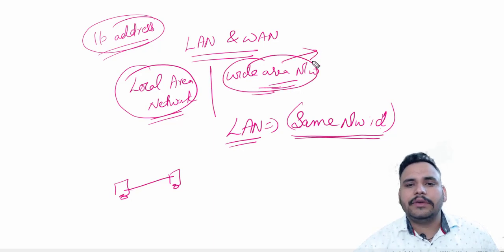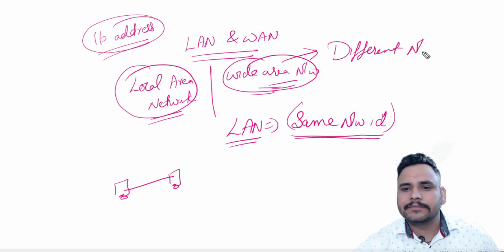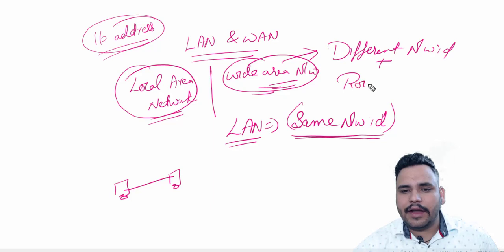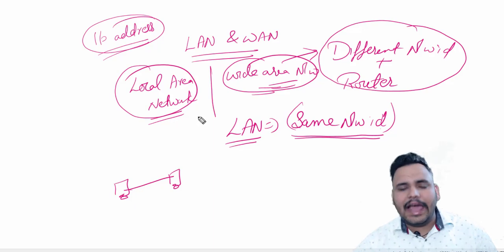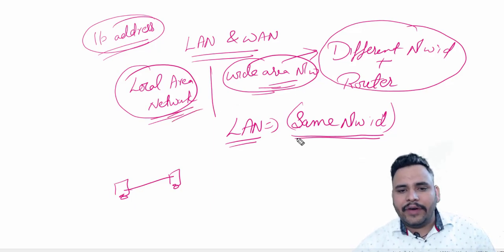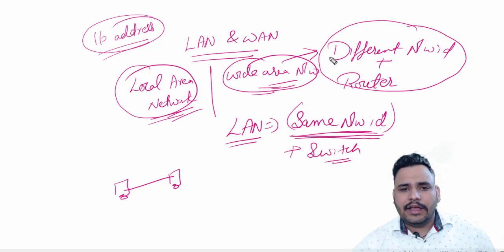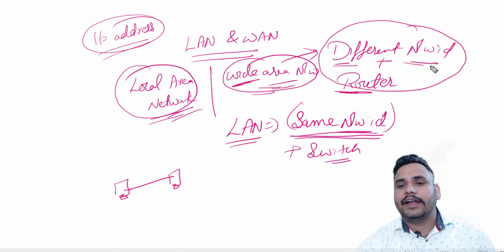Wide area network means if devices are connected with different network IDs and another device named router is being used here. So the difference between LAN and WAN is: LAN is used for small area purposes and wide area network is used for worldwide connectivity. In LAN, devices share the same network ID and a switch or hub is used, but in a wide area network, a router is used with different network IDs.